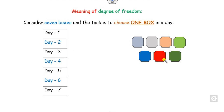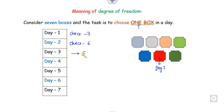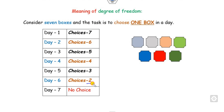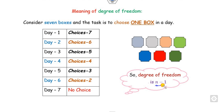For example, if you have seven boxes and your target is to choose one box per day: on day one you have seven choices, on day two you have six, on day three you have five, and so on. On day seven, there is no choice because only one box remains. So out of seven days, you have free choice for only six days. In general, the degree of freedom is n minus one. If a sample consists of 21 elements, the degree of freedom is 20.